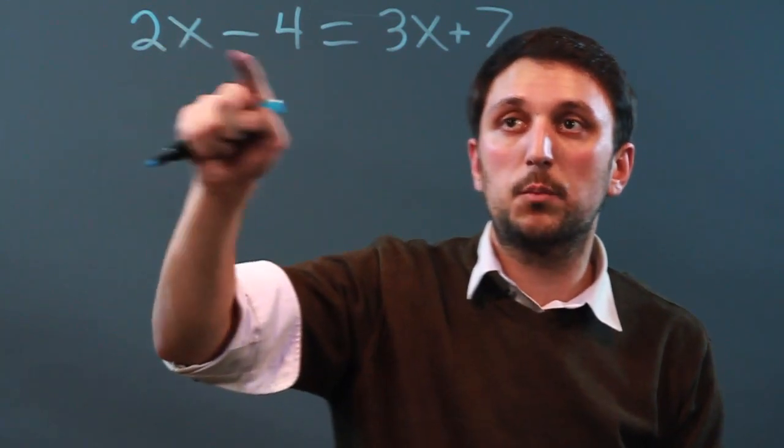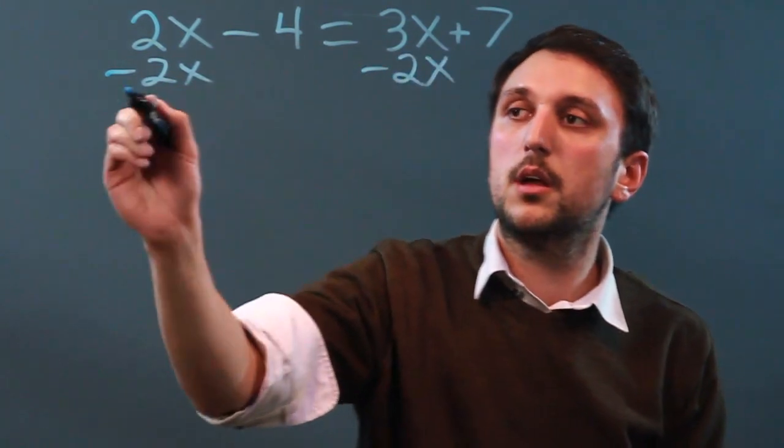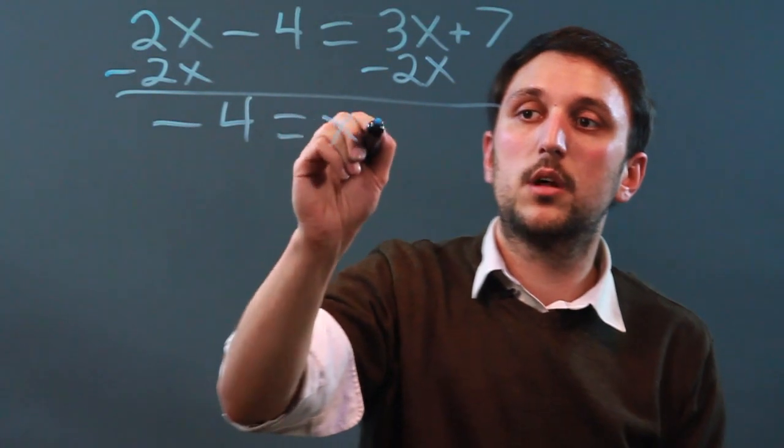So I like to go small over to big. So we're going to subtract 2x from each side. And we get negative 4 equals x plus 7.